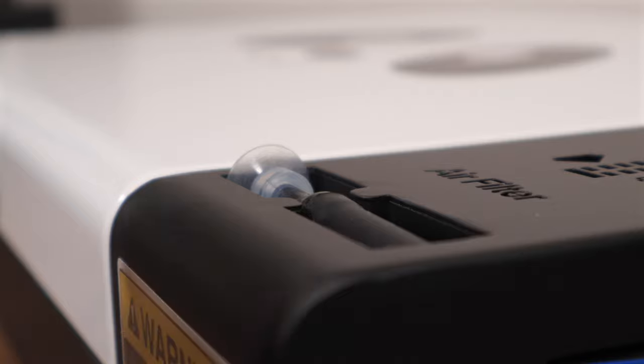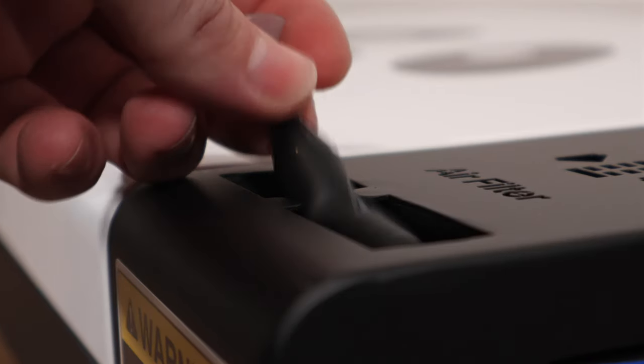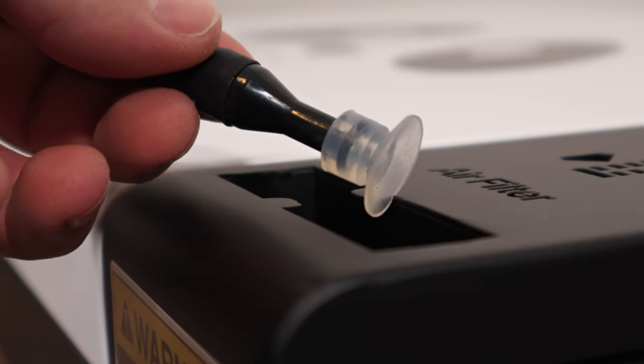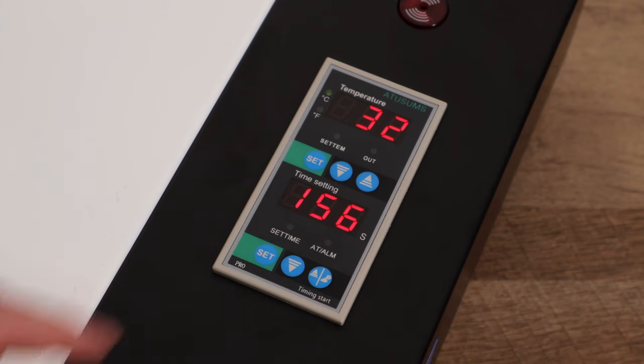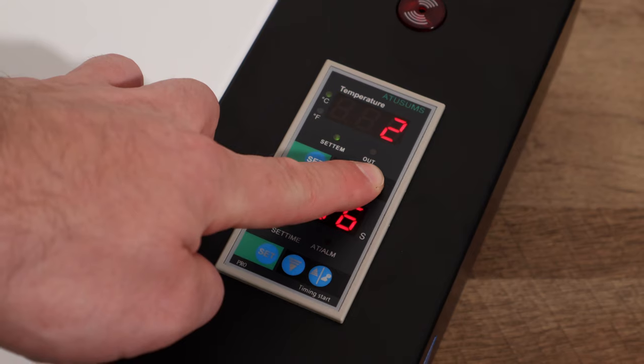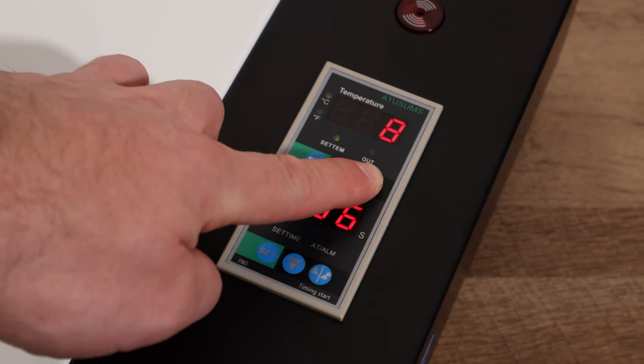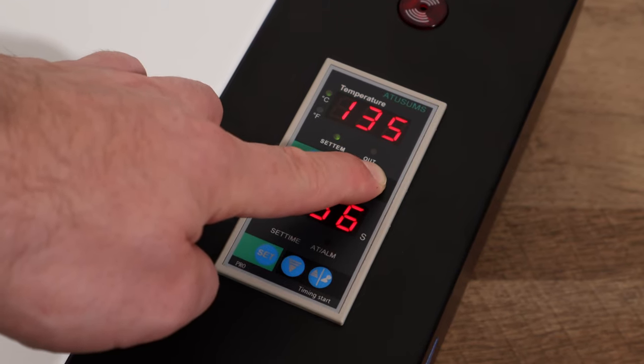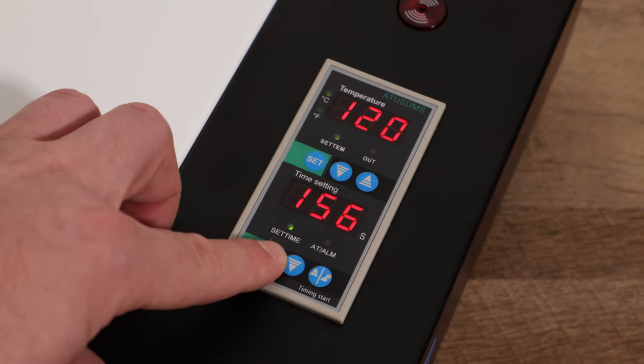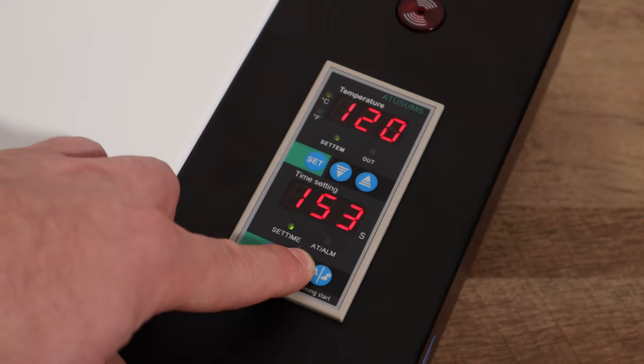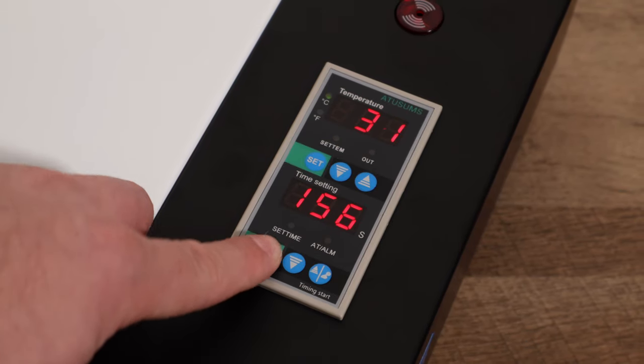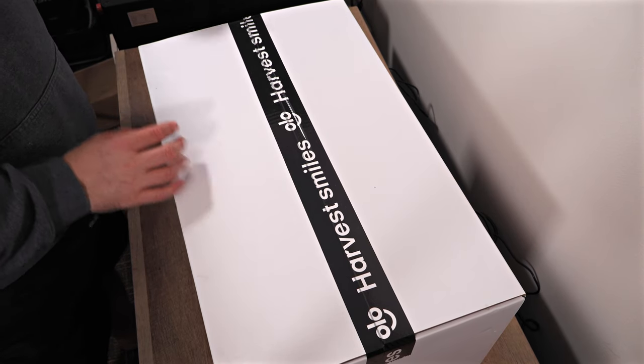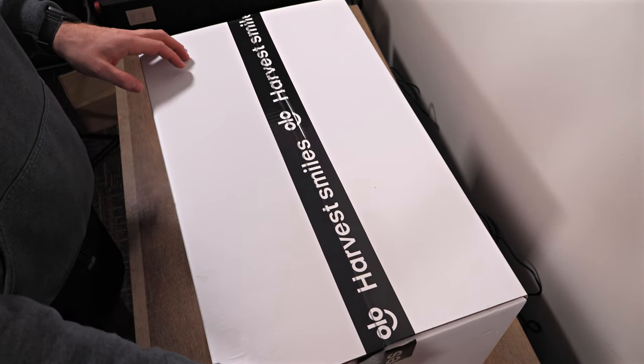The oven features a handy suction cup tool, perfect for safely removing the DTF film from the heated surface without risking burns or damage. It also has a user-friendly control panel that allows you to set both the temperature and the curing time, giving you precise control over your projects. Whether you're working on fabric or experimenting with other materials, this oven ensures consistent and reliable results. Later in the video, we'll walk you through the complete DTF printing process step-by-step so you can see exactly how everything comes together.